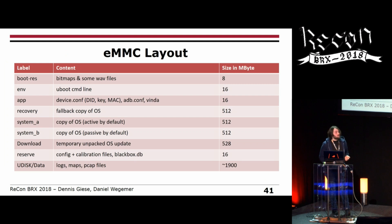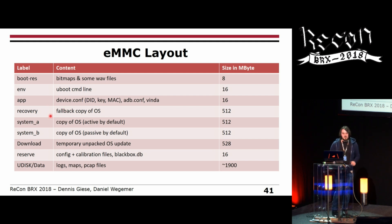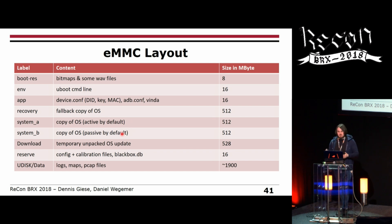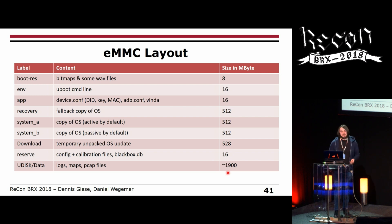Looking at the MMC layout on the vacuum: you have at least three copies of the operating system. One is a fallback copy that is never touched — the original Ubuntu delivered with the vacuum. There are two copies of the OS: one active and one passive. If something goes wrong, it reboots and boots the passive copy. The storage for maps and logs is the biggest partition, at nearly 2 gigabytes — a lot of space to store your data.